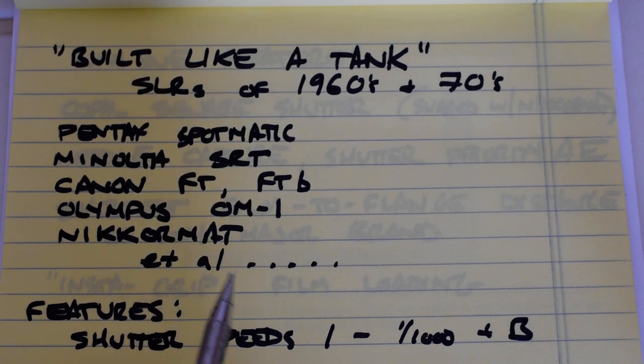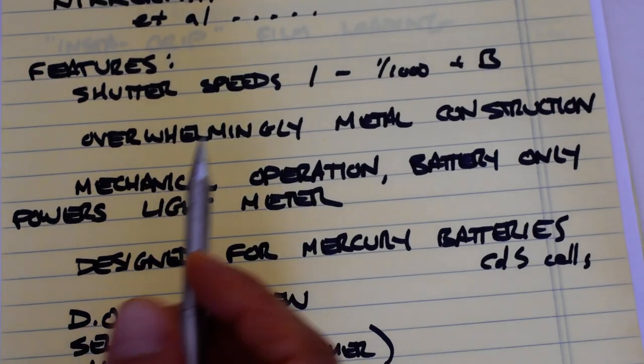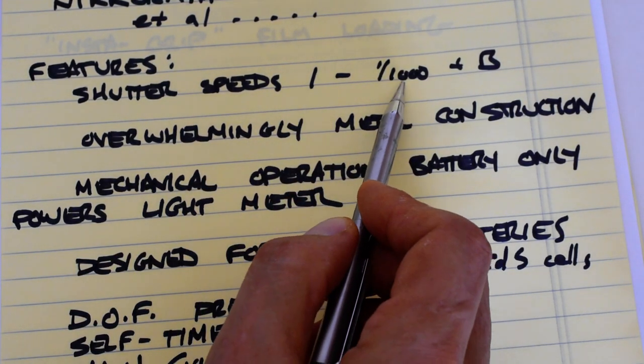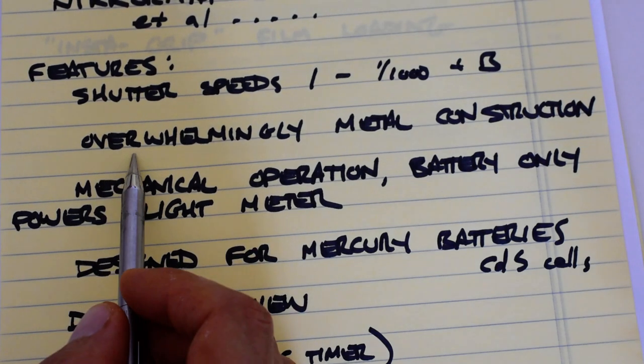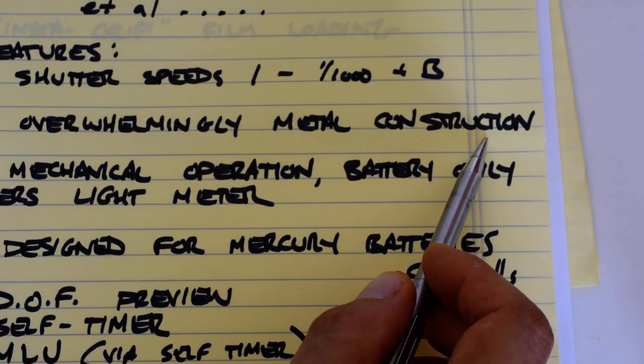So the features of the built-like-a-tank cameras of that period: generally speaking you're talking about shutter speeds from one second to one thousandth of a second plus B.